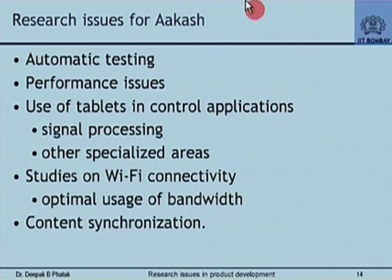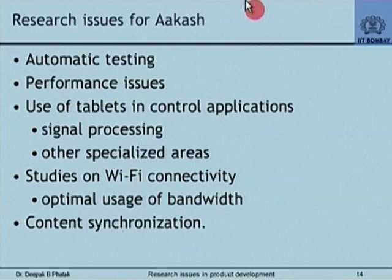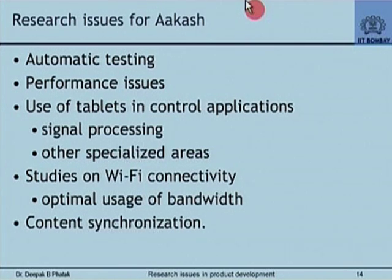Another research issue for Akash is automatic testing. With 2 tablets you test them individually, with 200 tablets you put 20 people to test them, with 20,000 tablets you put 10,000 people — and with 1 million tablets? This testing is well known in industry, but we should consider what the issues are in such automatic testing, particularly in software testing and software installation. These are not trivial problems, though they may not be hard research problems — they are performance issues, and performance improvement would come by tweaking software as well as hardware.